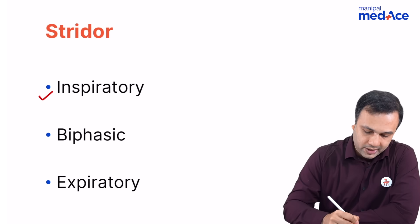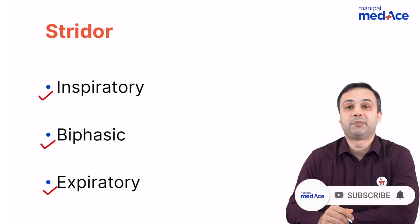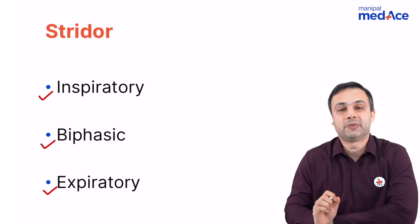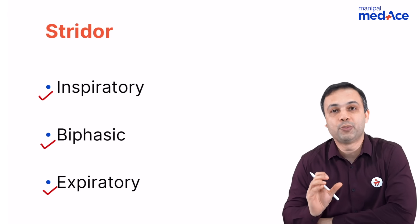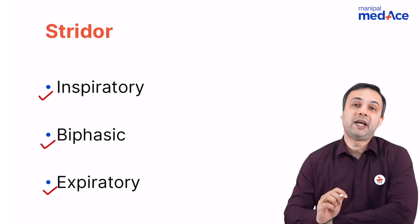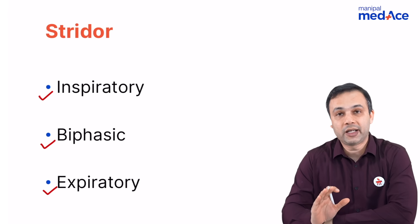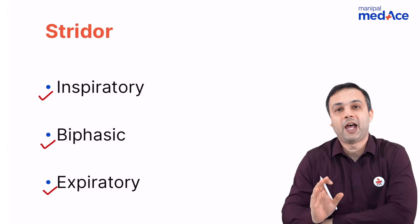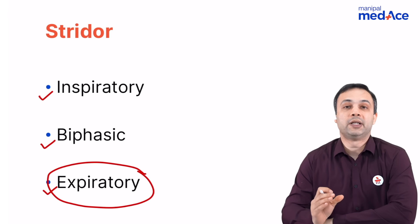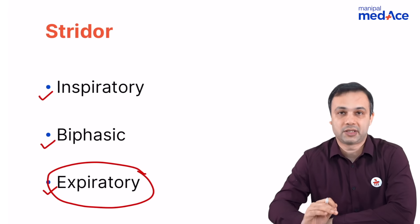There are three important types of stridor: inspiratory, biphasic, and expiratory stridor. Whenever a patient or a child presents with inspiratory stridor, think of supraglottic airway issues. Whenever a person presents with biphasic stridor, remember it is either a glottic or a subglottic pathway which is affected. When you talk about expiratory stridor, it is more often the trachea and the primary bronchus that is responsible for producing that type of stridor.